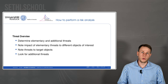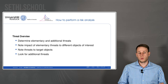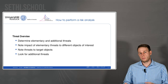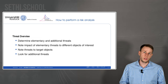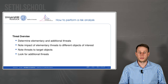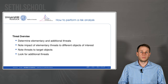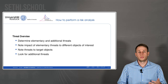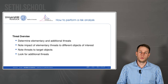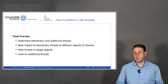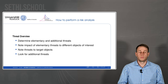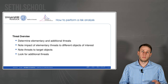First we want to get a threat overview. We want to determine elementary and additional threats, and note the impact of elementary threats to different objects of interest. A company has different objects of interest — for example the building, but also servers, infrastructure, or devices. There are elementary threats like fire, flooding, or earthquakes. In the BSI standard there are already some basic threats defined, and we have to look if they apply to our objects of interest.